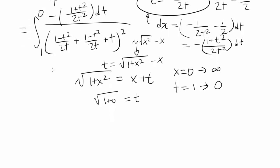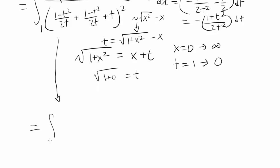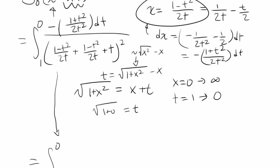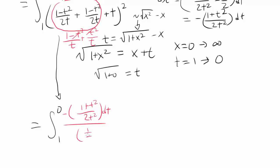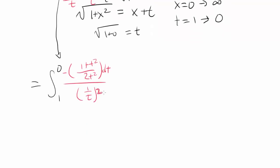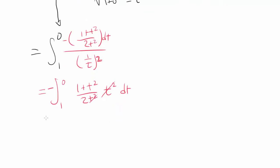So we have the integral from 1 to 0. Simplifying the denominator: x plus (x plus t) — combining the two x terms gives (1 minus t²)/t, adding t (written as t²/t) makes the t² terms cancel, yielding 1/t. So the integrand becomes: negative (1 plus t²)/(2t²) dt divided by 1/t squared. Dividing by 1/t² is the same as multiplying by t², so t² cancels, and we pull out negative one half to get negative one half times the integral of (1 plus t²) dt.